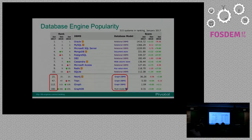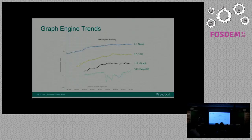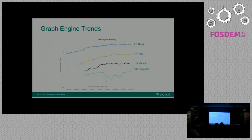I thought I would start with a slide from DB Engines that looks at database engine popularity. You can see the usual suspects in the top 10. The first graph database, Neo4j, is around 21st position, and there are about four in the top 200. That's not to say these are not great products, but when it comes to the enterprise, they're less present. With respect to trends over the last four years, Neo4j is at the top, followed by Titan, Giraffe, and GraphDB. They're certainly growing — this is a log scale so it looks flatter than it is — they're actually growing significantly, although maybe flattened a little bit in the last year.